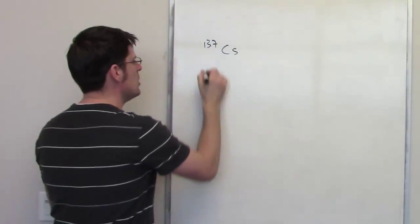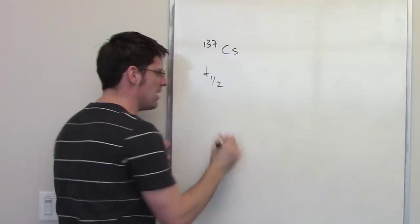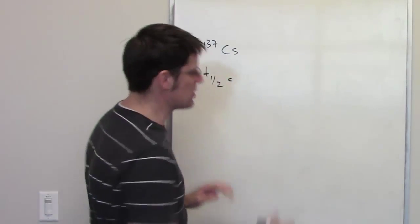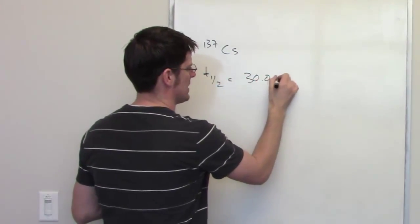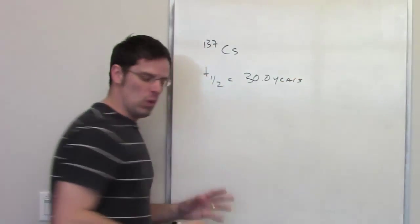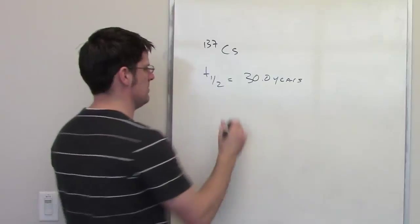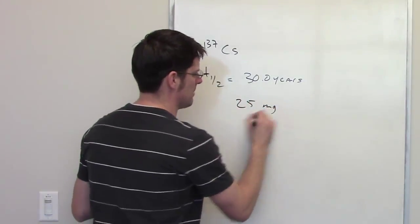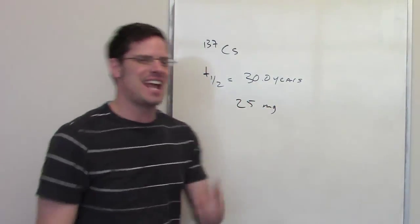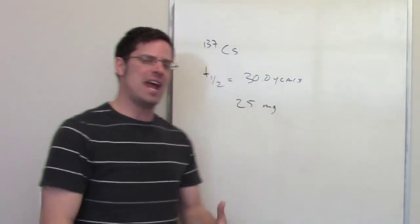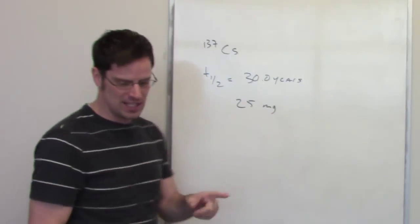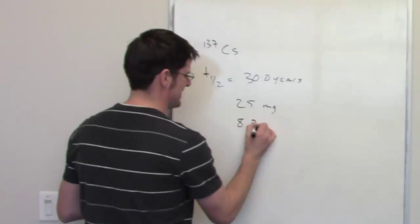It tells me that the half-life, or T sub 1 half, in this case is equal to 30 years, so we'll go ahead and write down 30 years here. It wants us to begin with 25 milligrams, so that's the amount of cesium that we're starting out with, and it's asking us how much time would have to elapse until this is decayed down to 8.7 milligrams.